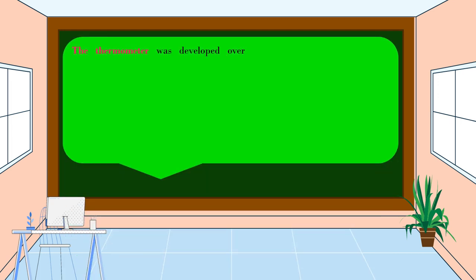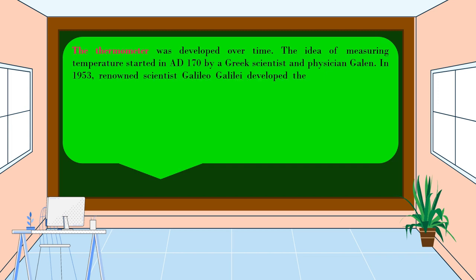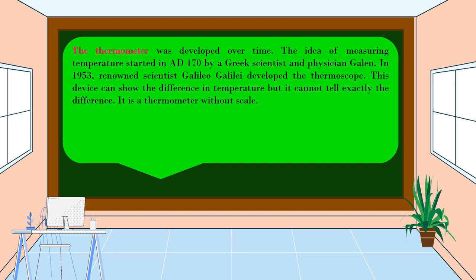The thermometer was developed over time. The idea of measuring temperature started in AD 170 by a Greek scientist and physician, Galen. In 1593, renowned scientist Galileo Galilei developed a thermoscope. This device can show the difference in temperature, but it cannot tell exactly the difference. It is a thermometer without a scale.